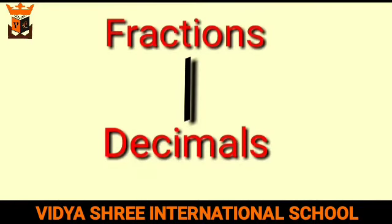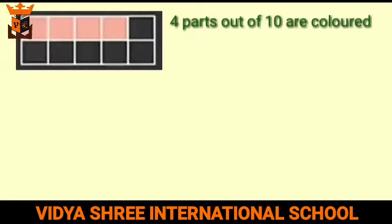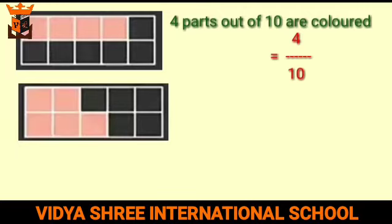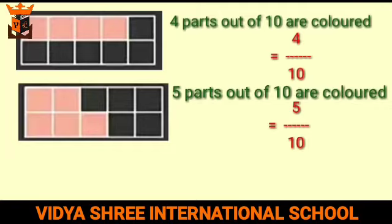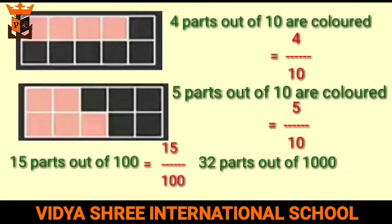We have already studied about fractions. Now let us look at some interesting fractions. Here, 4 parts out of 10 are colored, meaning the shaded region represents 4 tenths, or we can write it as 4 upon 10. If 5 squares are shaded, it represents 5 tenths — that is 5 upon 10. Similarly, 15 parts out of 100 can be written as 15 upon 100, and 32 parts out of 1000 can be written as 32 upon 1000.